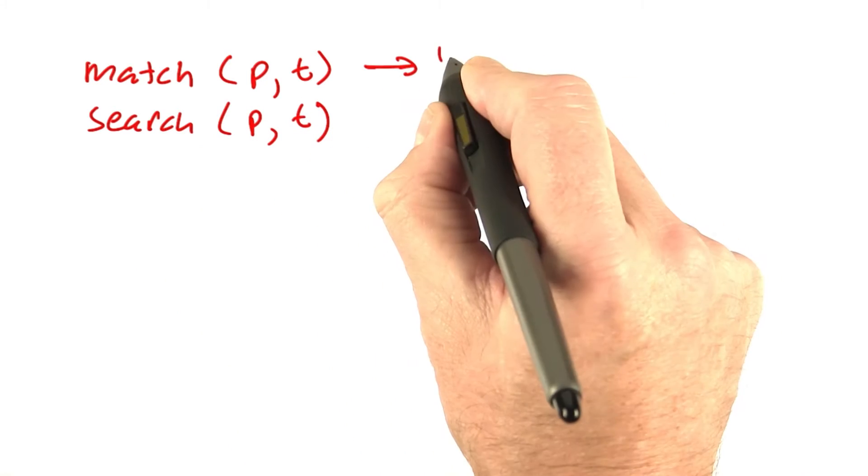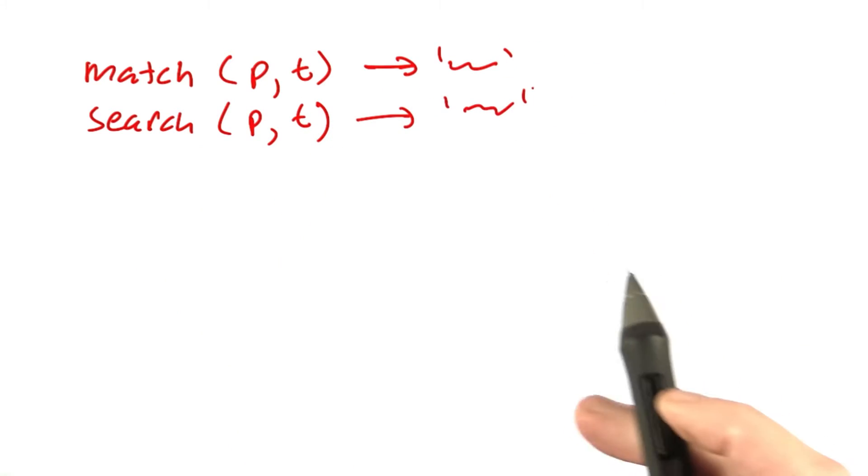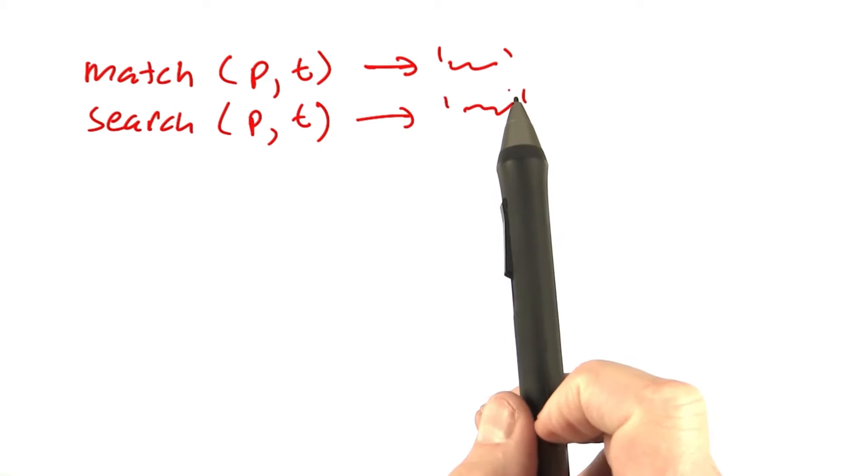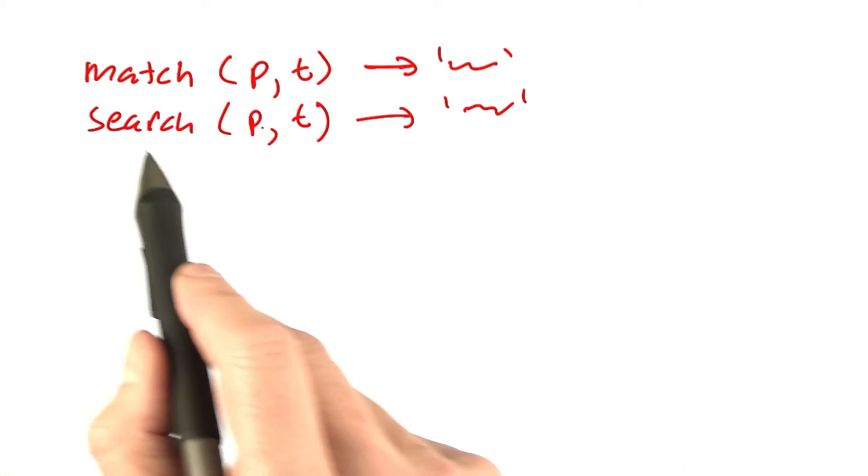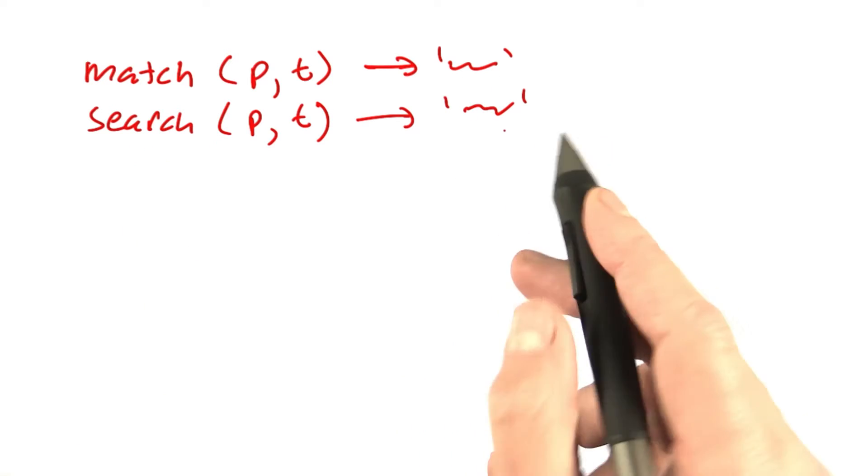They both return a string representing the earliest, longest match. But for match, the string would only return if it's at the start of the string. For search, it'll be anywhere within the string.